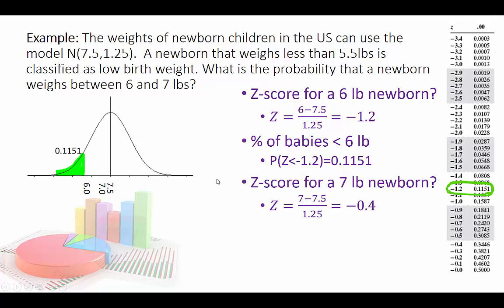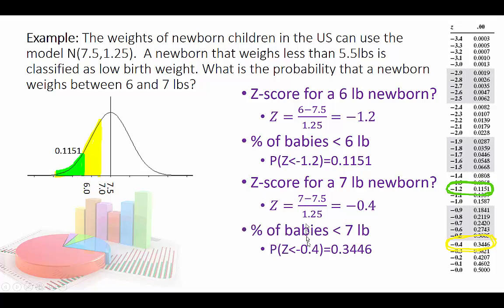I can also calculate the z-score for a 7-pound newborn, and it's negative 0.4. When I look up that z-score, it's 0.3446 — and that's this area going all the way to the left. So the probability a baby weighs less than 7 pounds is 0.3446.